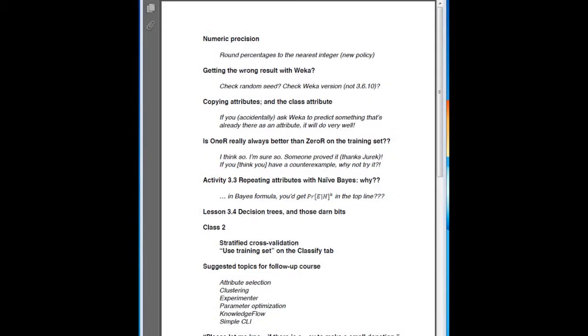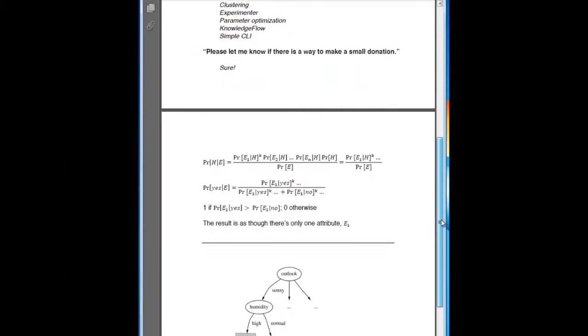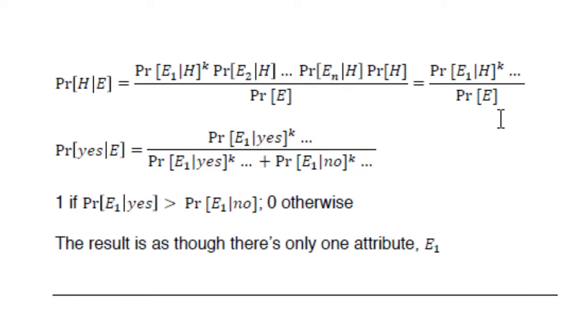Someone asked about the mathematics. In Bayes' formula, you'd get P(e1|h) to the power of k if the attribute was repeated k times in the top line. First of all, the Bayes formulation assumes independent attributes, so the Bayes expansion is not strictly true if the attributes are dependent. But the algorithm works off that, so let's see what would happen. Here's the equation for the probability of the hypothesis given the evidence — h might be 'play yes' or 'play no' in the weather data. It equals a formula where we can write P(e1|h) to the power of k, where e1 is repeated k times, times all of the other terms, divided by P(e).